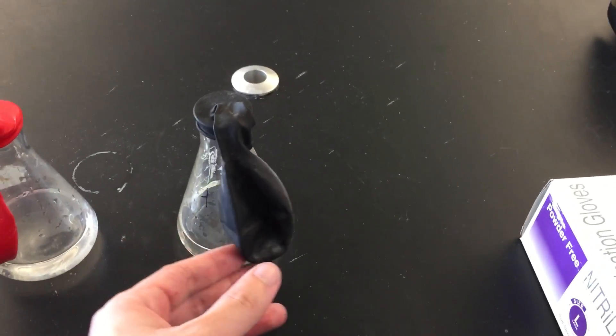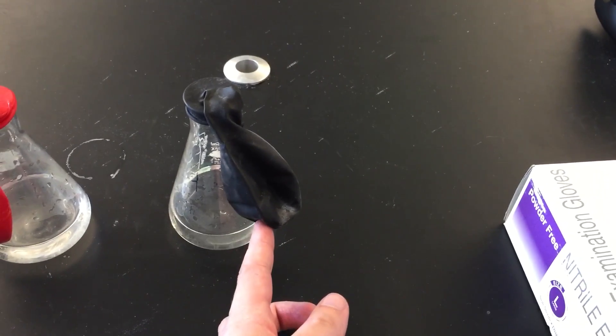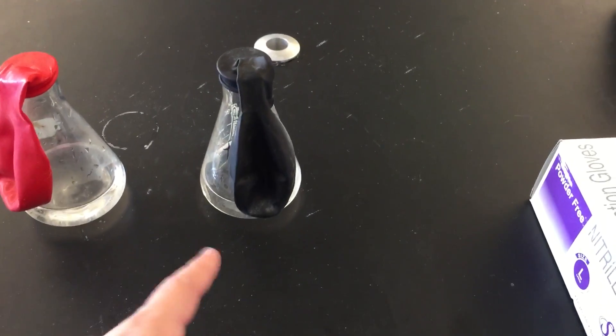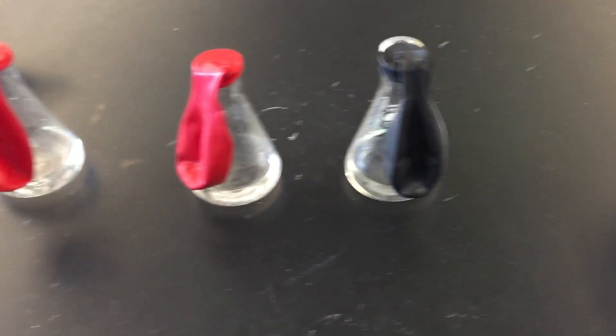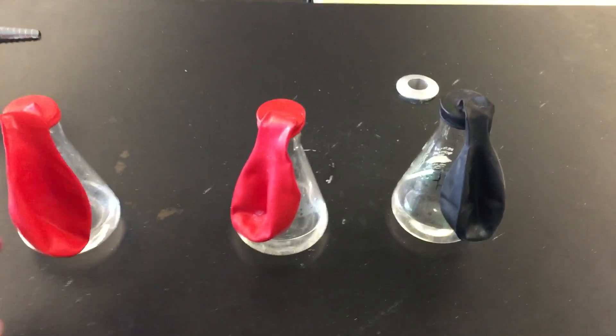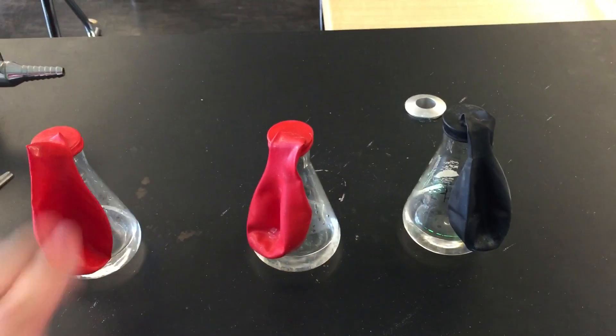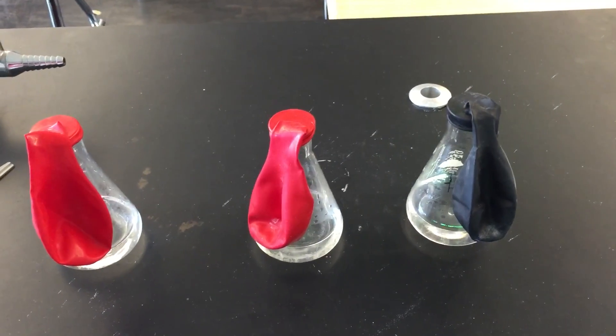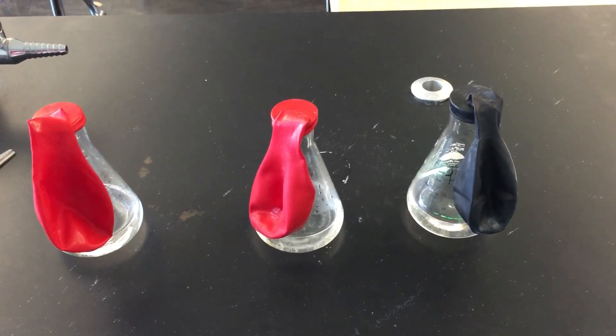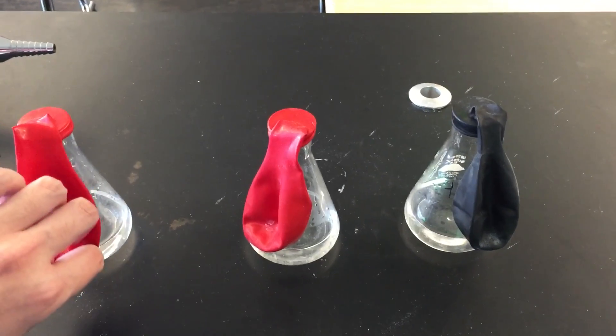And the black balloon has the most. It has 5.5 grams in the balloon and then you can see that there are still the exact same amount of vinegar in each one. So what I'm going to do is I'm going to invert these balloons and we're going to see what happens. I might have to hold them down so we'll see if I'm able to record all of this at once. But here we go.